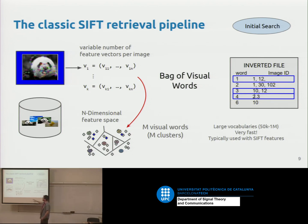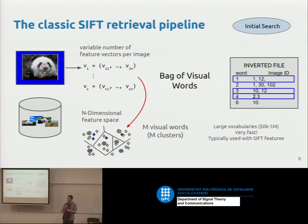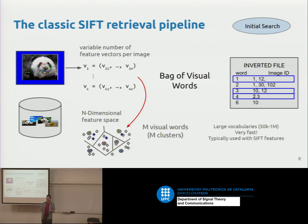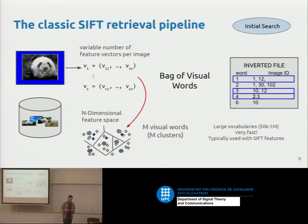You don't have to use this visual word representation — there are also Fischer vectors and other variations that improve performance. The nice thing about this representation is that with a million different visual words, most won't occur in any given image, giving a very high-dimensional sparse vector. Sparse representations are really scalable and fast. Because your image is now like a document, you can use the same technology used for text search at internet scale. The key trick is an inverted file that maps words to the images containing them, letting you narrow down the dataset very quickly.